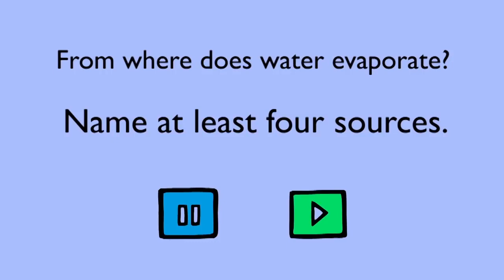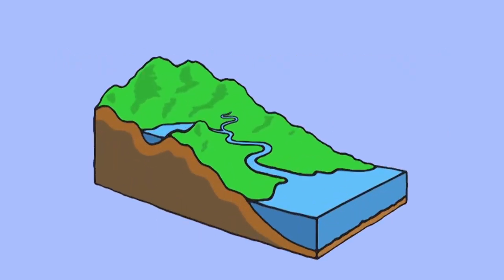Some correct answers include any body of water, from a puddle to a pond, from a pond to a lake, from lakes to rivers and from rivers to seas. All of these act as bodies of water that can be evaporated.